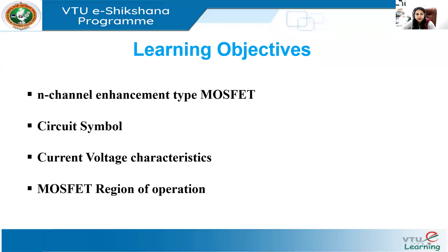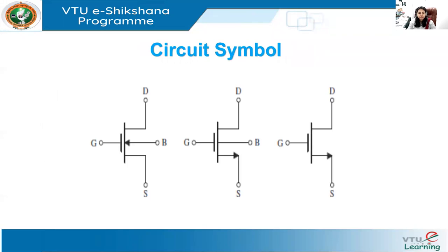Today we will take up the n-channel enhancement type MOSFET and we will see its symbolic representation, the circuit symbol, and then we will also discuss the current-voltage characteristics and MOSFET regions of operation. The last session I was supposed to discuss the current-voltage characteristics but due to time constraints, I had to accommodate that in today's session. So this is the symbolic representation of MOSFET.